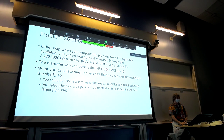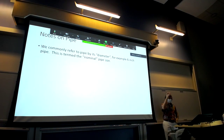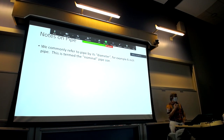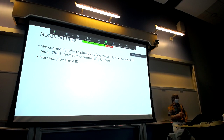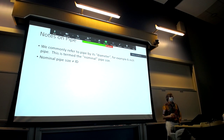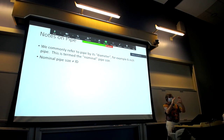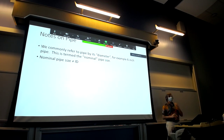Pipe is commonly referred to by its nominal pipe size — for example, 'six inch pipe.' However, the nominal pipe size is rarely the actual inside diameter. There are many different inside diameters for six-inch pipe depending on the material and pressure rating. The actual inside diameter is a function of the outside diameter and wall thickness, subject to manufacturing tolerances.